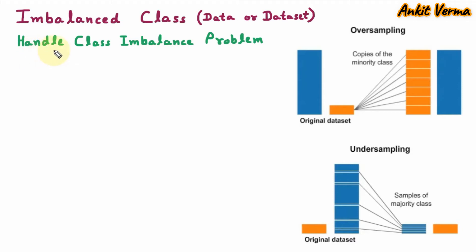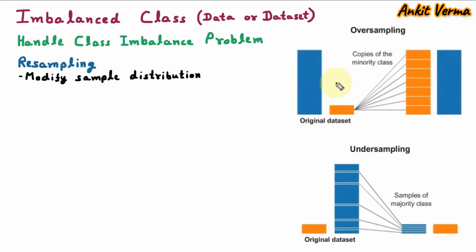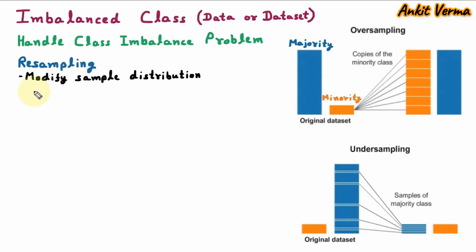Now we are learning techniques to handle the class imbalance problem. The first technique is resampling. Resampling modifies the sample distribution. In the diagram, we can see the original dataset where the data is imbalanced — we have a minority class with very less data and a majority class with more data. Resampling is used to balance class distribution by modifying this data.